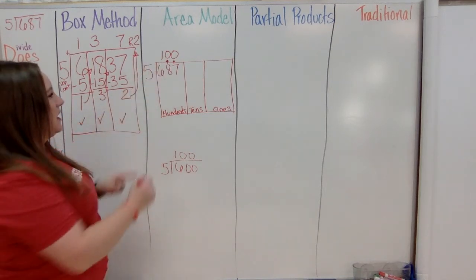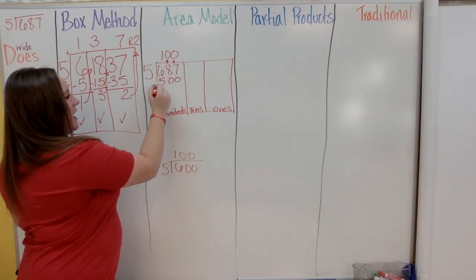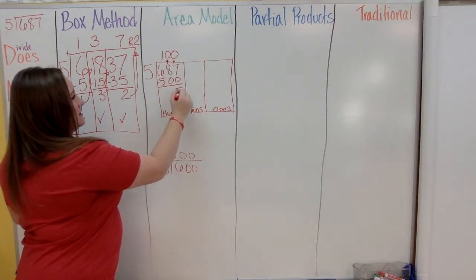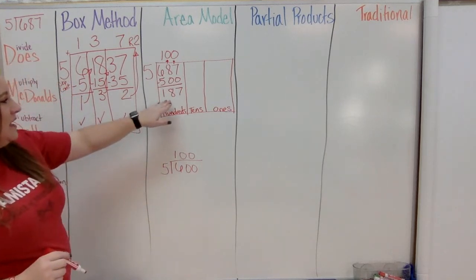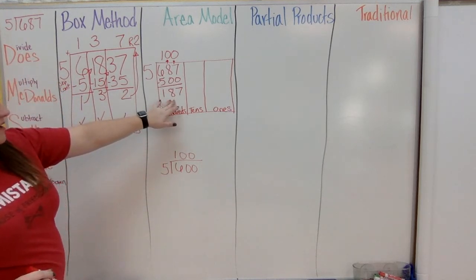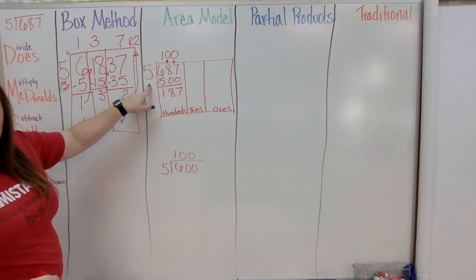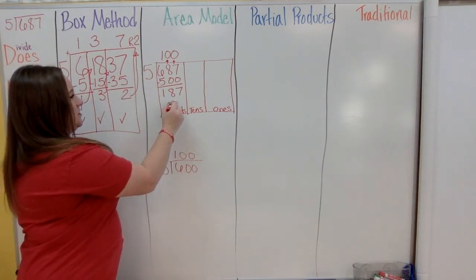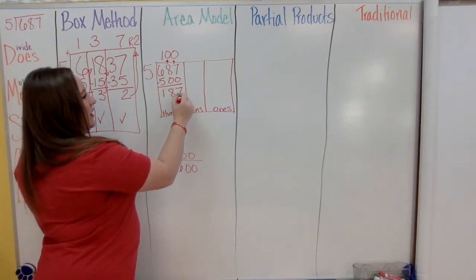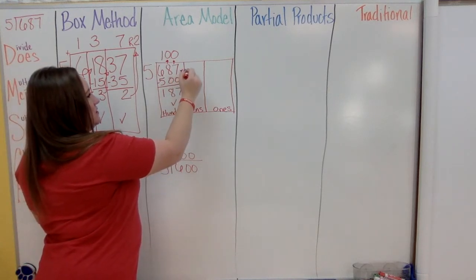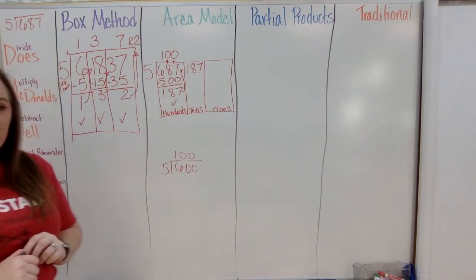Now subtract: 687 minus 500 gives us 187. Check the remainder — is 187 still bigger than 5? Yes, so it gets a check. Now bring up: those 187 go into the next section.